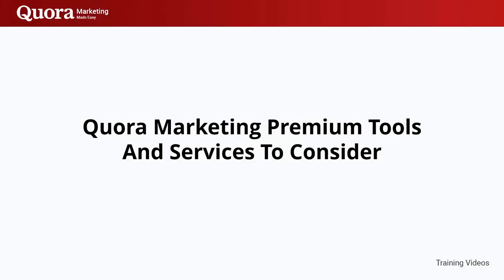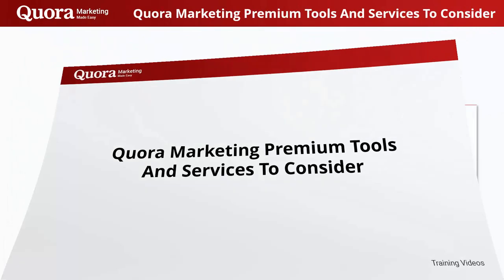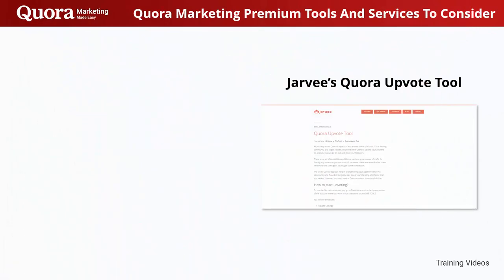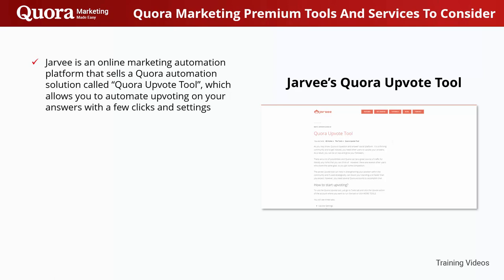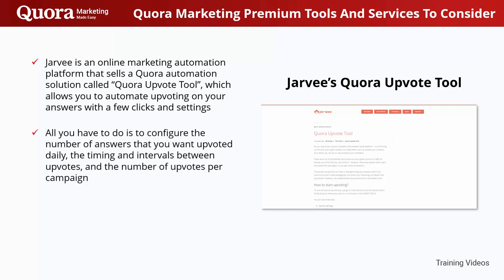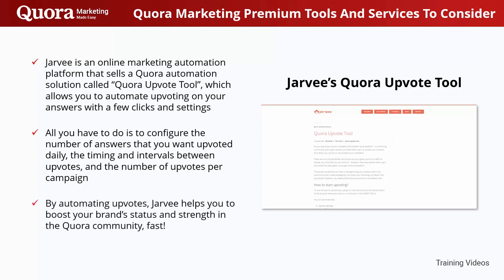Quora Marketing Premium Tools and Services to Consider. Jarvee is an online marketing automation platform that sells a Quora automation solution called Quora Upvote Tool, which allows you to automate upvoting on your answers with a few clicks and settings. All you have to do is configure the number of answers you want upvoted daily, the timing and intervals between upvotes, and the number of upvotes per campaign. By automating upvotes, Jarvee helps you boost your brand's status and strength in the Quora community fast.